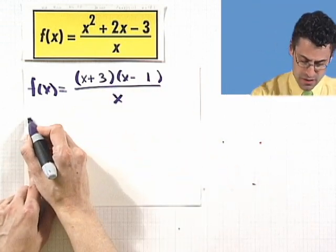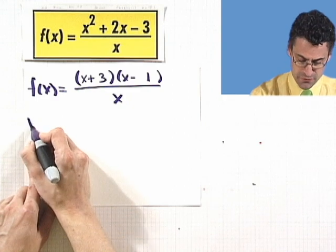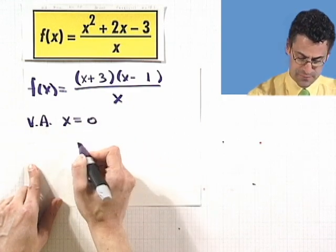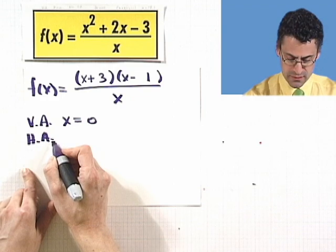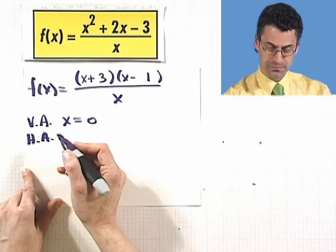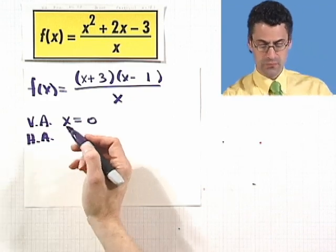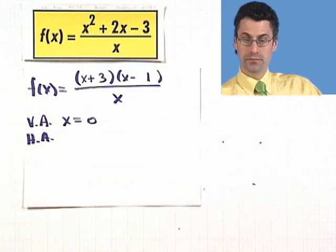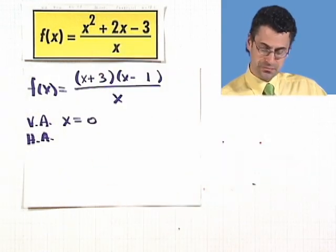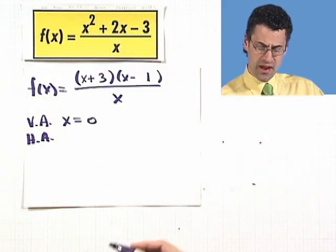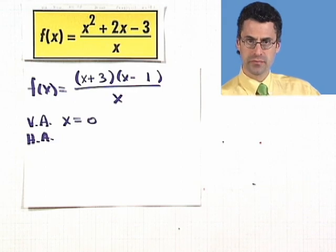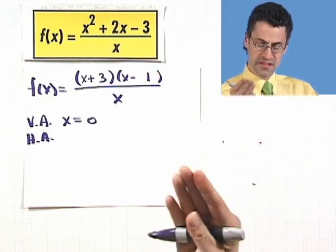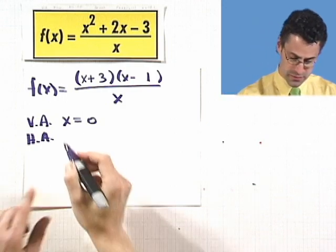Asymptotes. Vertical asymptotes — that's where the denominator equals 0, that's where x equals 0. Pretty easy. Horizontal asymptote? Well, the degree of the polynomial in the numerator is 2 — it's a quadratic. In the denominator it's linear, it's 1. The power in the top is greater than the power in the bottom. The top dominates. No asymptote.